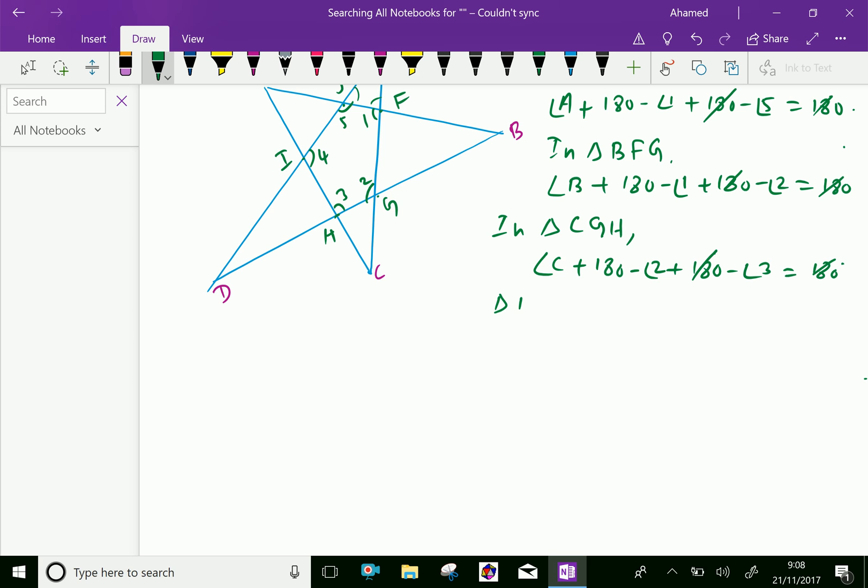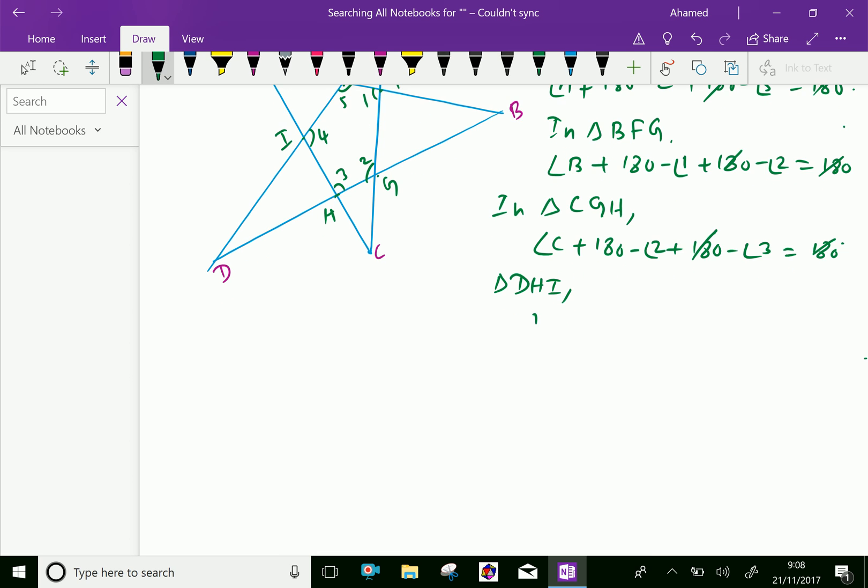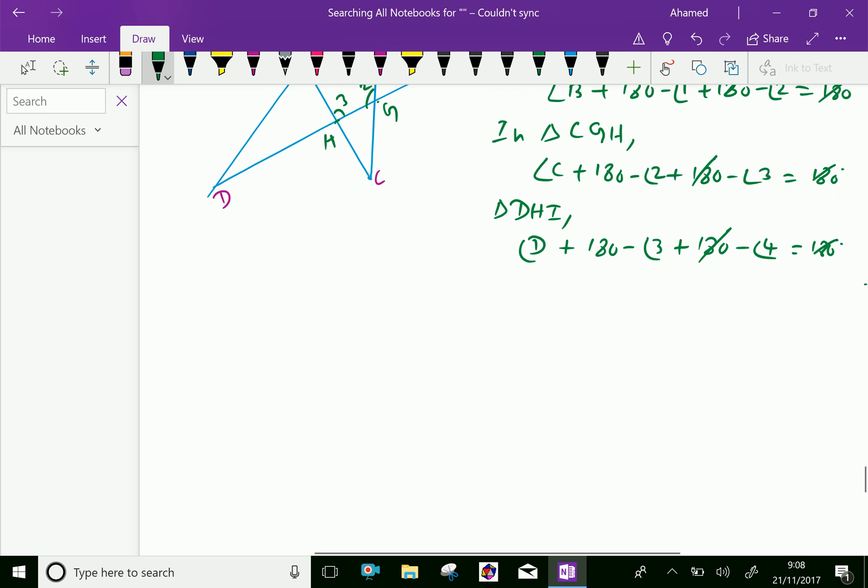And triangle DHI, similar manner, angle D plus 180 minus angle 3 plus 180 minus angle 4 equal 180 degrees. So this 180 is cut.